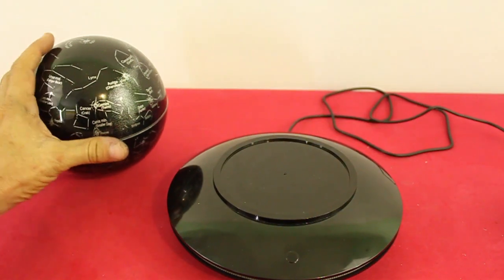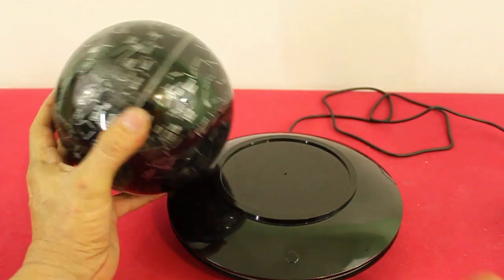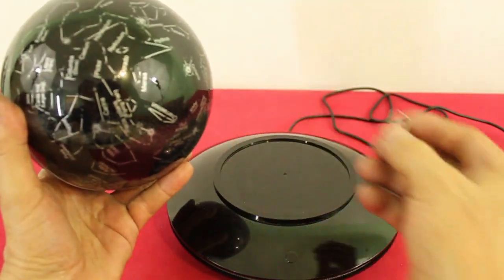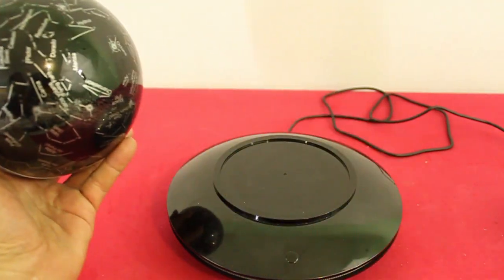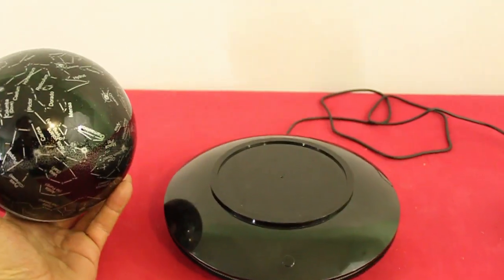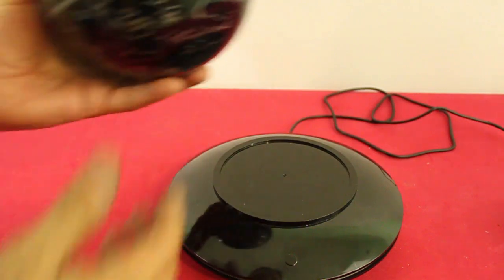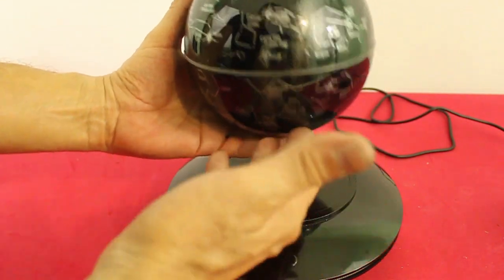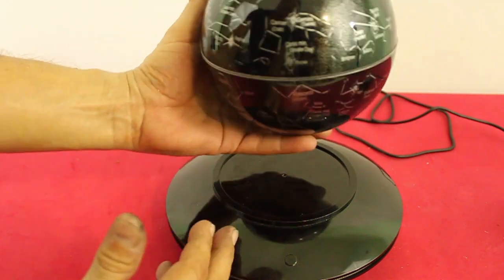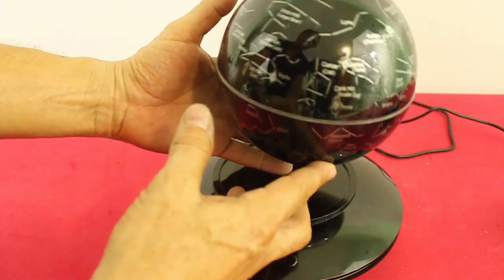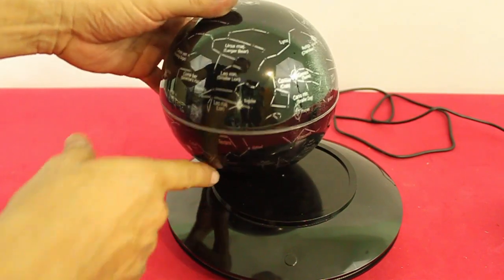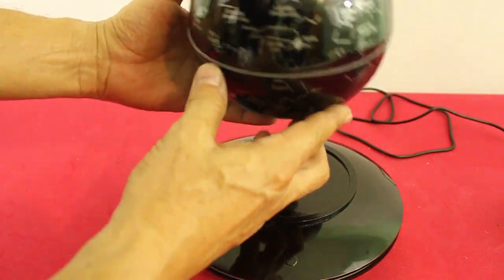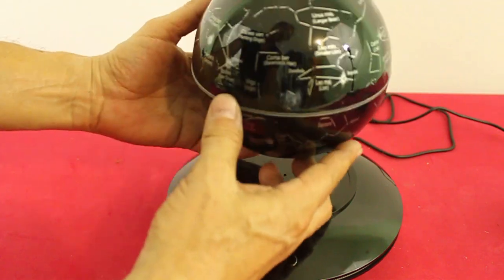And inside the globe we also have a magnet that attracts metallic objects. Now that it's disconnected and has no power, we can see that there is a repulsion between the base and the globe, but it is not stable. The globe is attracted to the periphery of the base. It does not stay in the center.